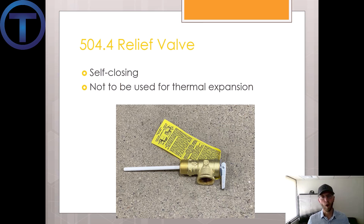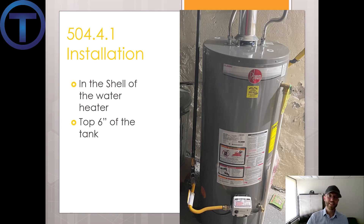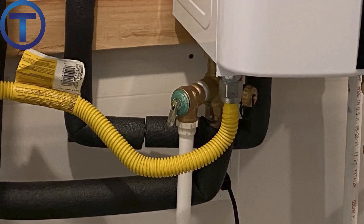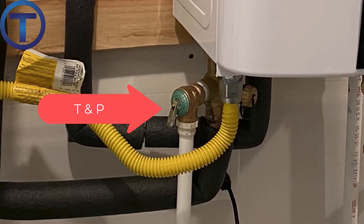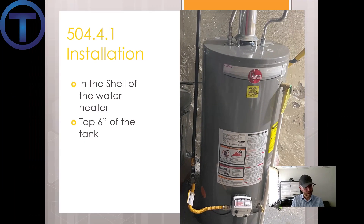That's not what the temperature pressure relief valve is for. It should be in the shell of the water heater and within the top six inches of the tank. On tankless water heaters this is a little different since there isn't a tank — there is a temperature pressure relief valve but it's not on the tank itself. On a tank-type unit, it is in the shell towards the top six inches, and can be on the side or come out the top.